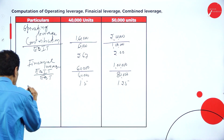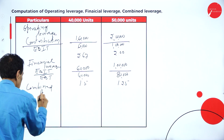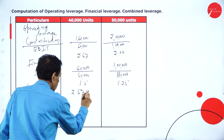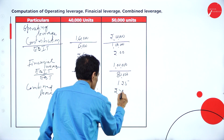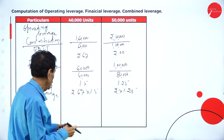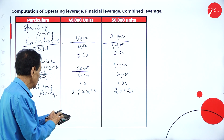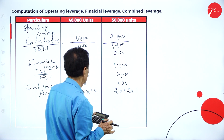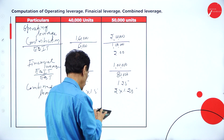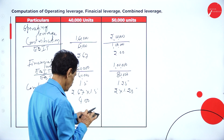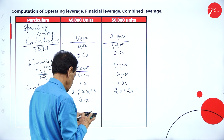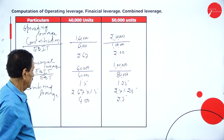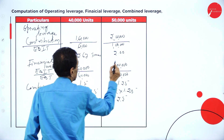Combined leverage = operating leverage multiplied by financial leverage. For 40,000 units: 2.67 into 1.5 = approximately 4. For 50,000 units: 2 into 1.25 = 2.5 times.